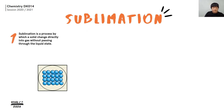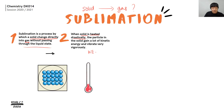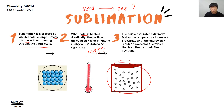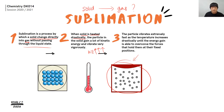Sublimation happens when the solid changes directly into gas without going through the liquid state. This can happen when the solid is heated drastically — meaning the temperature increases extremely fast. At this point, the kinetic energy of the solid particle is extremely high and the particles move extremely fast. The energy gained allows the solid particles to overcome the strong attractive forces holding them at their fixed positions, and gas is produced.